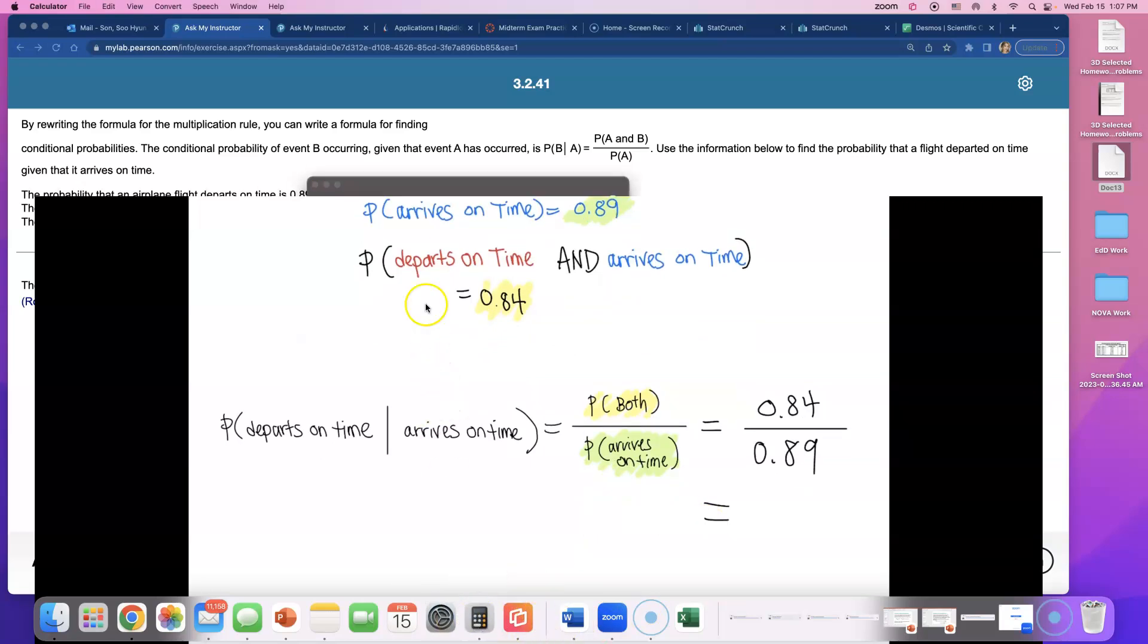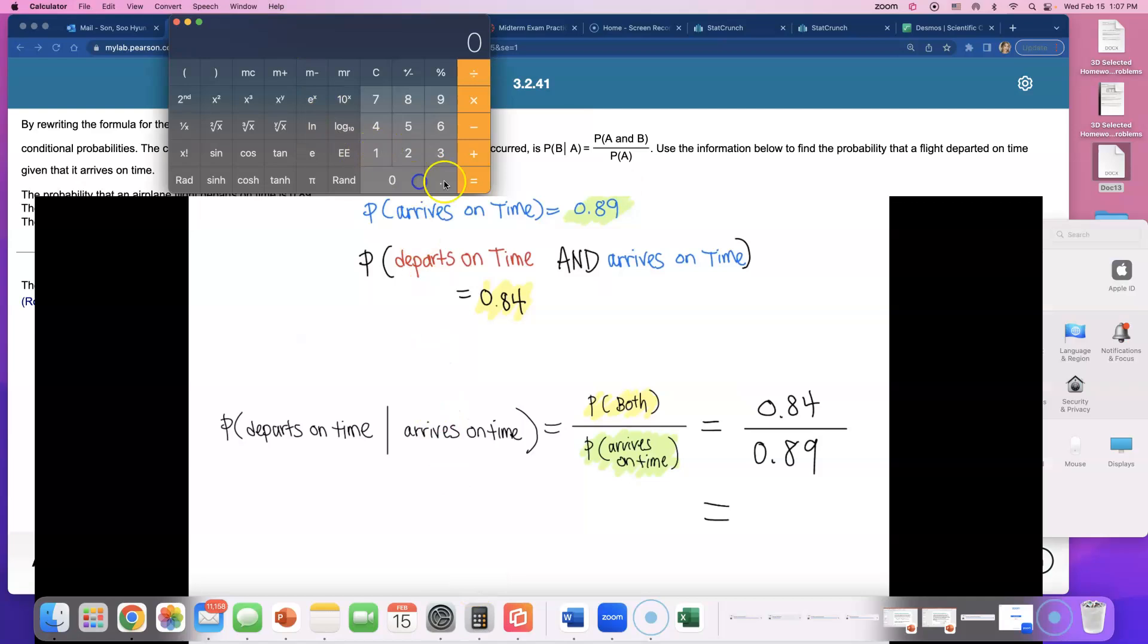All we have to do is divide now. So get a little mini calculator and do 0.84 divided by 0.89, and that came out to be 0.94.